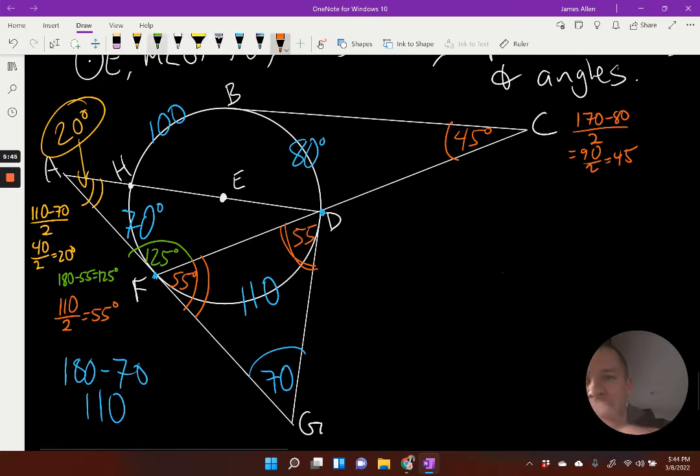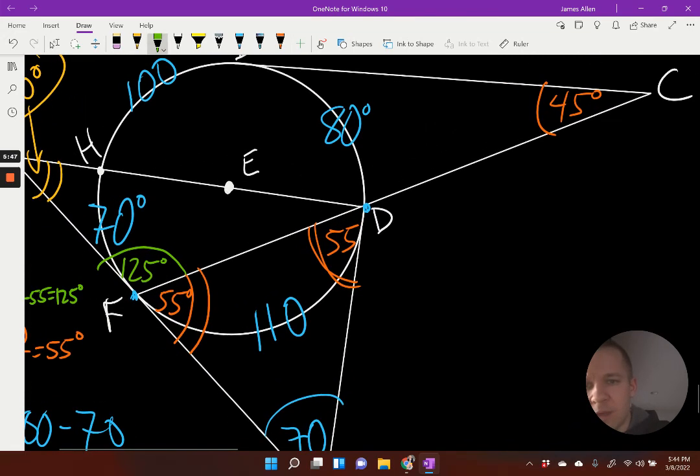How about this angle right here? Well, that one intercepts this arc of 70 degrees and it's an on angle. So 70 divided by two, that's 35 degrees. 35 degrees.